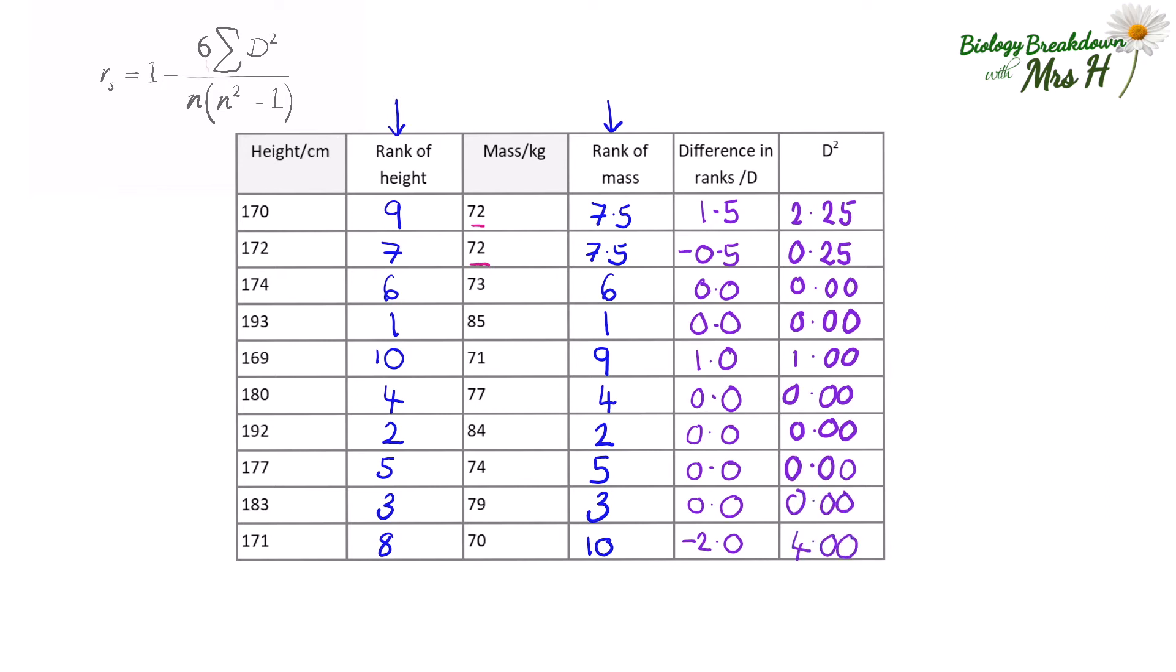Then you add column D squared together, which gives you 7.5. This is the sum of D squared, and you can see where this goes in the formula.